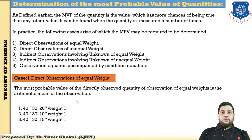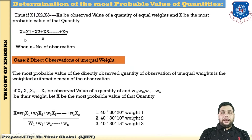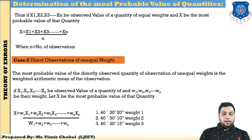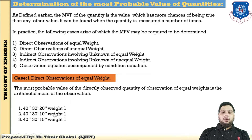How to find the most probable value for direct observation of equal weight: the most probable value of a directly observed quantity of equal weight is the arithmetic mean of the observations. If x1, x2, x3 up to xn are the observed values, and weight is equal, then the most probable value x equals (x1 + x2 + x3 + ... + xn) / n, where n is the number of observations. Try to find this as an exercise at home.